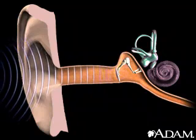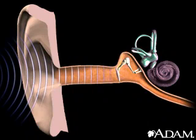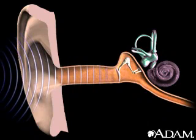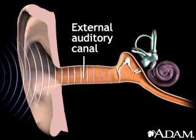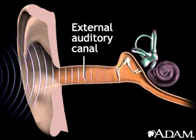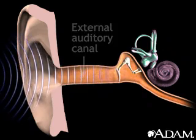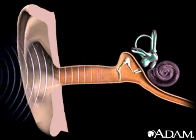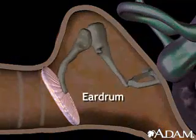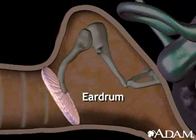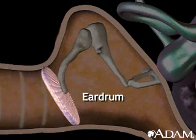As sound waves enter the ear, they travel through the outer ear through the external auditory canal and strike the eardrum, causing it to vibrate. The central part of the eardrum is connected to a small bone of the middle ear.